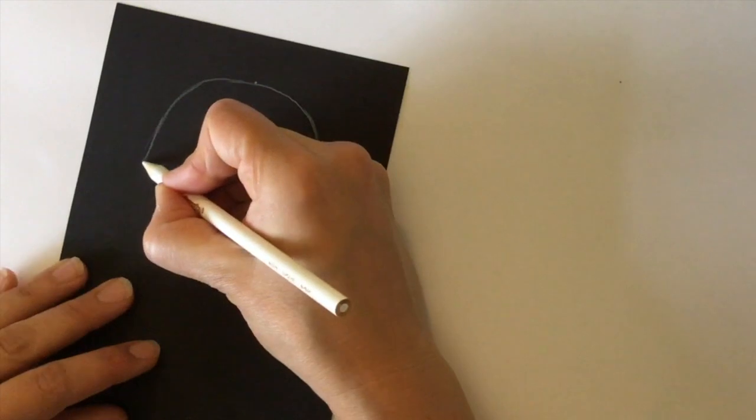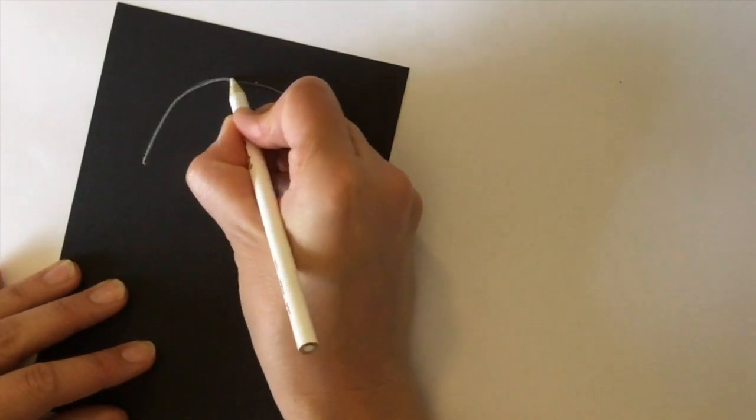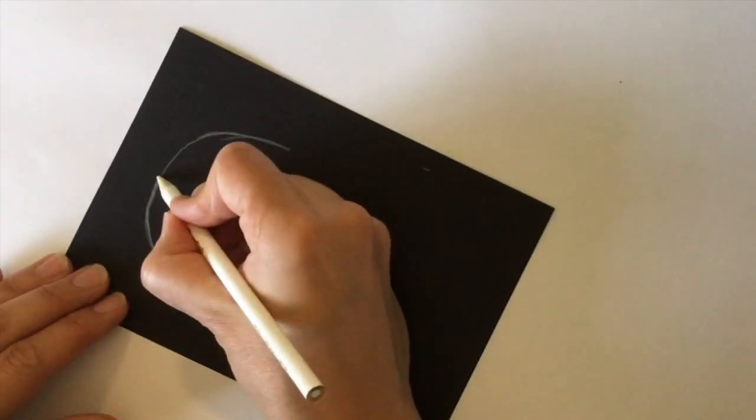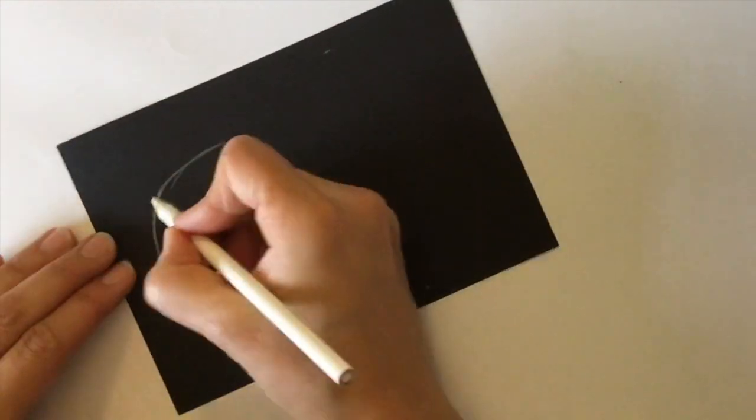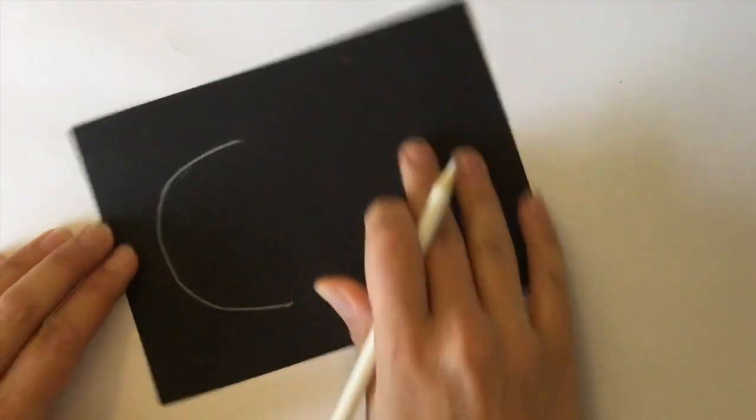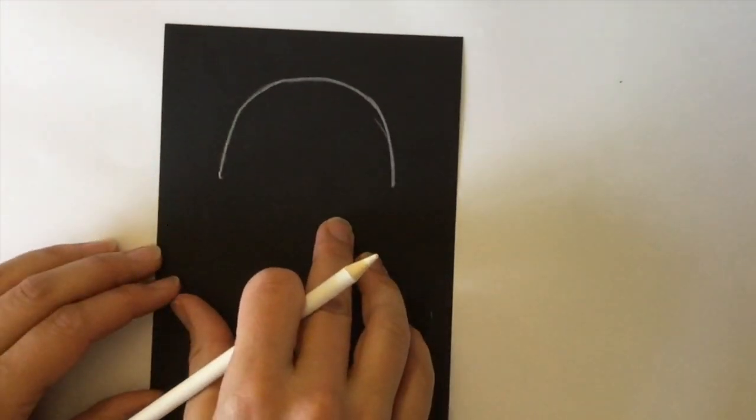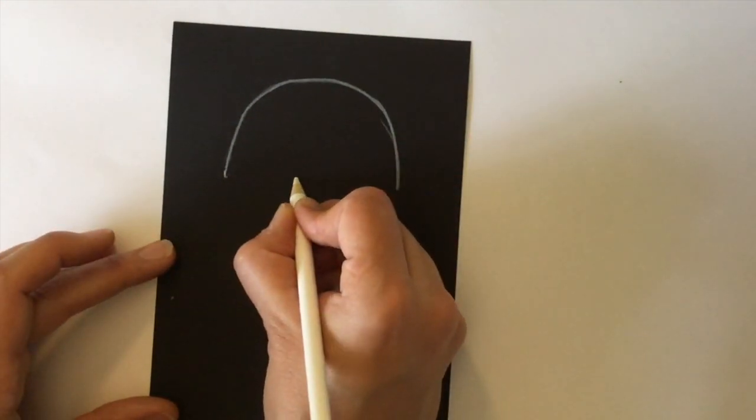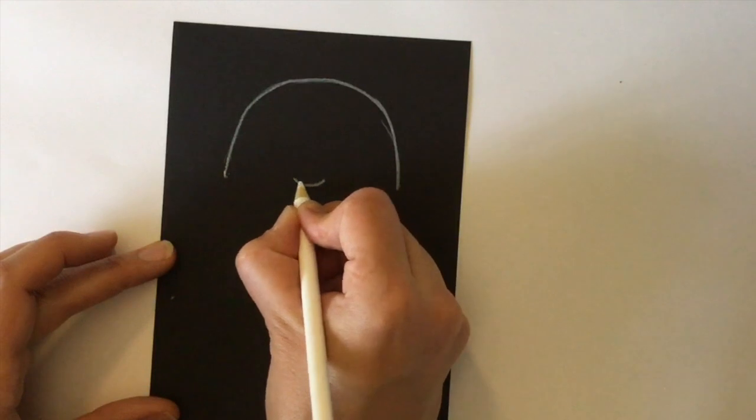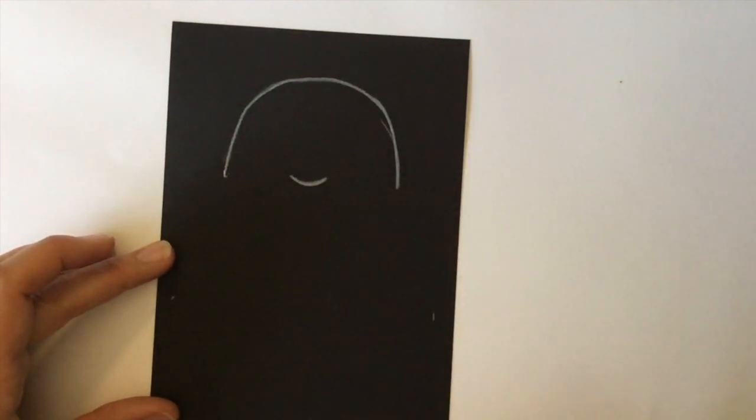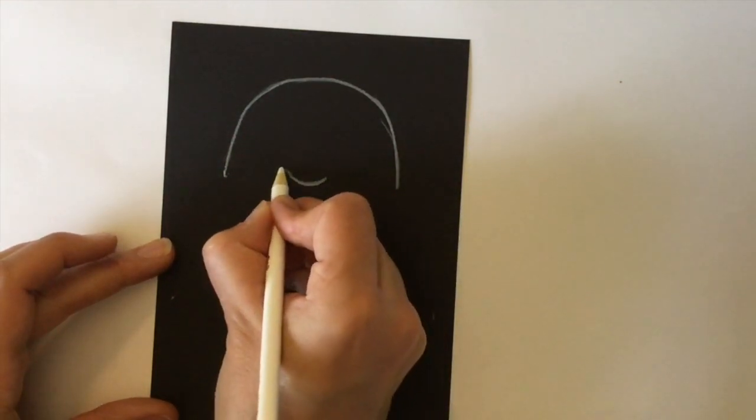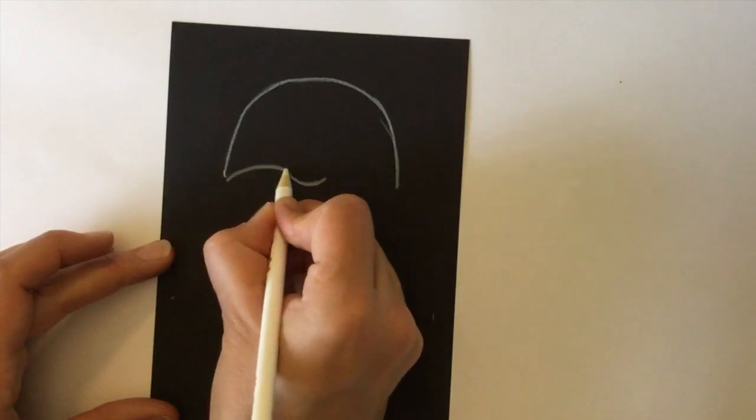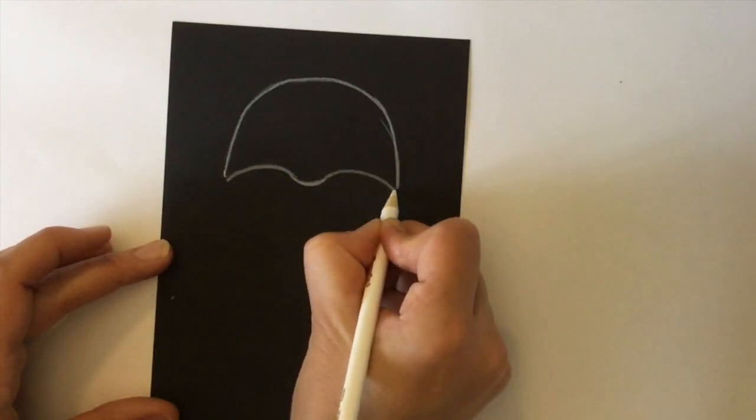We're going to start by drawing four arced lines: the top of his helmet, the area above his nose, and the brim of his helmet. Draw two lines flaring outwards.